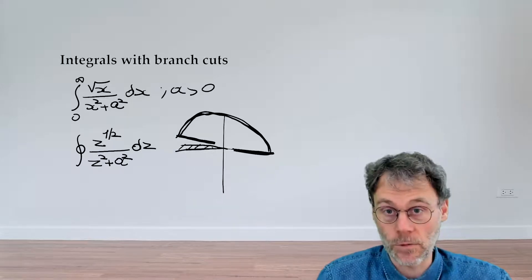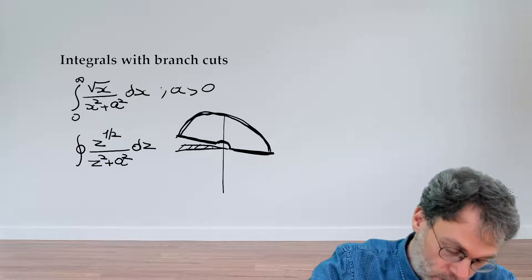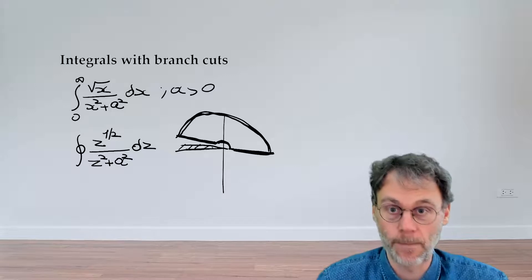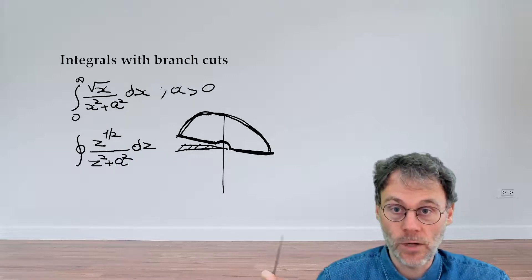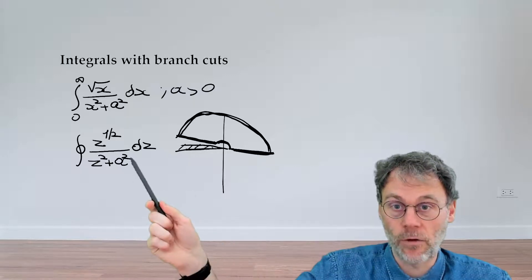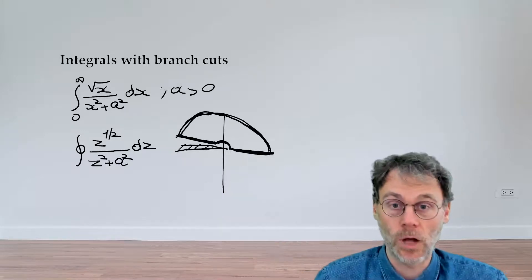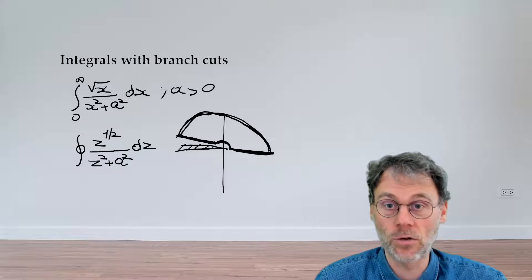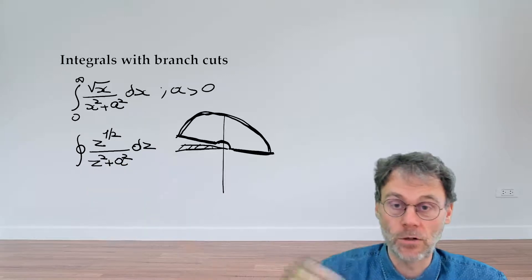Just to be on the safe side, we also include a small circle to exclude the branch point as well. Now we have the two main ingredients: our function f(z) and our contour. Everything is ready to start the machinery of residue calculus to evaluate this integral.